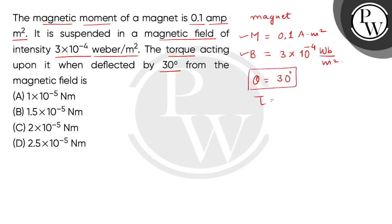We have to find torque. As we know, torque is represented as MB sin θ. We put the values: M is 0.1, B is 3×10⁻⁴, and we take sin of 30 degrees.